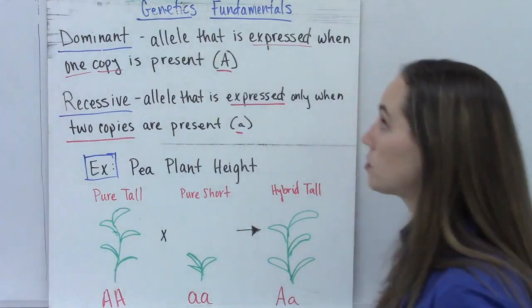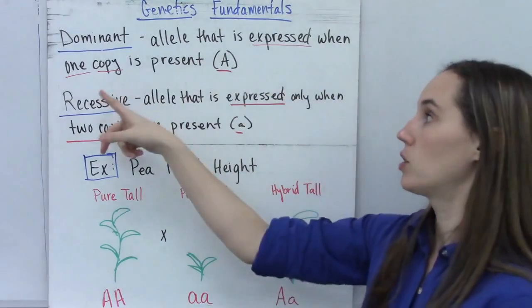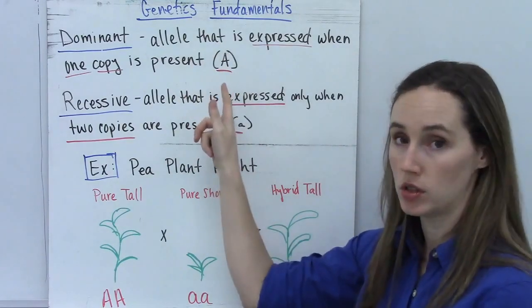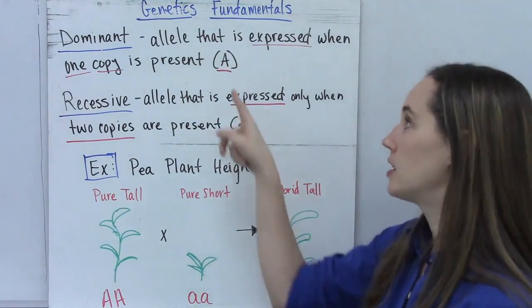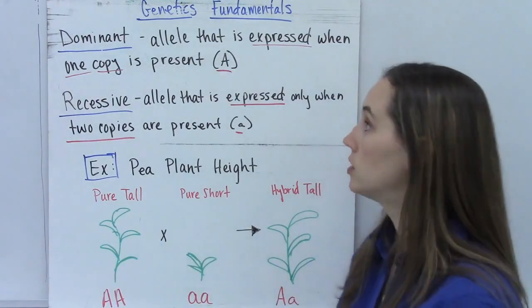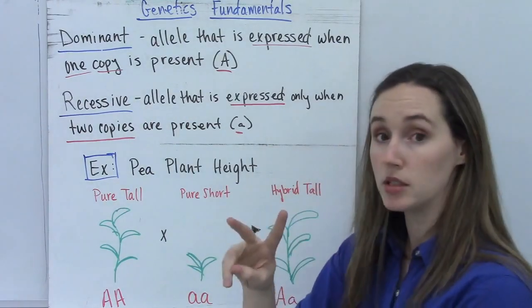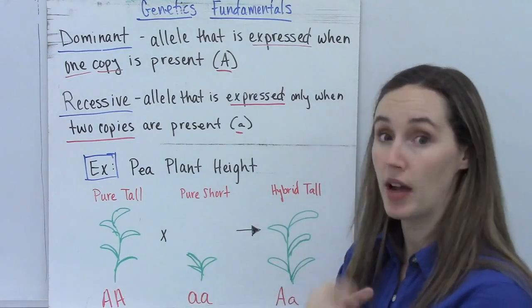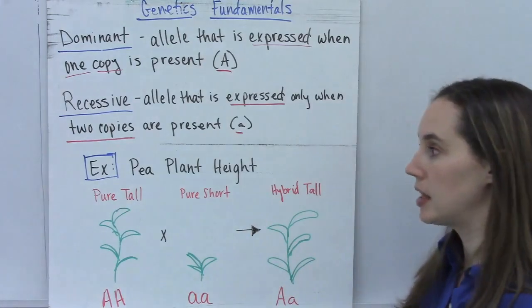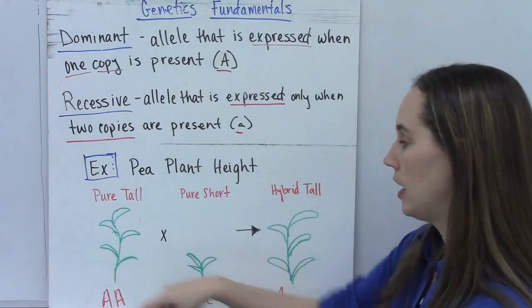Speaking of dominant and recessive, a dominant allele is an allele that is expressed even when there's only one copy of that allele in a cell, and it's notated as a capital letter. So letters represent genes, and the case of the letter, either uppercase or lowercase, designates whether it's dominant or recessive. So recessive alleles, on the other hand, are alleles that are expressed only when two copies of that allele are present in the cell. So you would have had to get a copy of the recessive allele from both parents in order to see it.